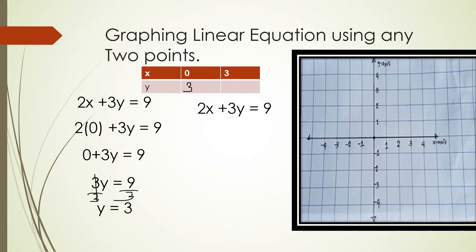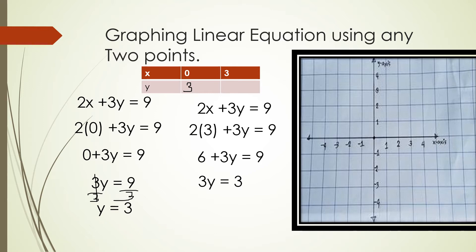Next, substituting x = 3: 2 times 3 plus 3y equals 9, so 6 plus 3y equals 9. We need to add negative 6 on both sides — that's the addition property of equality — leaving 3y equals 3. Dividing both sides by 3, y equals 1. So I now have two points: (0, 3) and (3, 1).